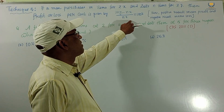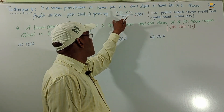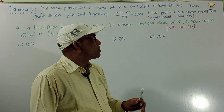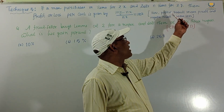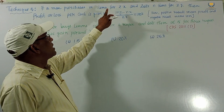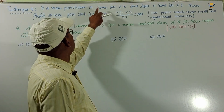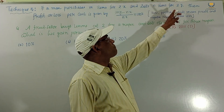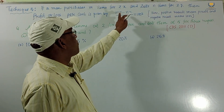After calculation, if the result is positive then it represents profit, and if the result is negative then it represents loss. So positive result means profit and negative result means loss. This is our formula: a person purchases m items for rupees x and sells n items for rupees y, giving formula (my minus nx) by nx into 100 percent.